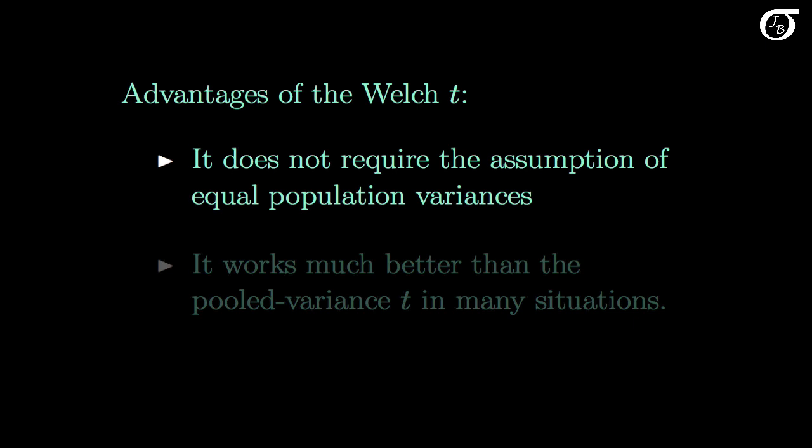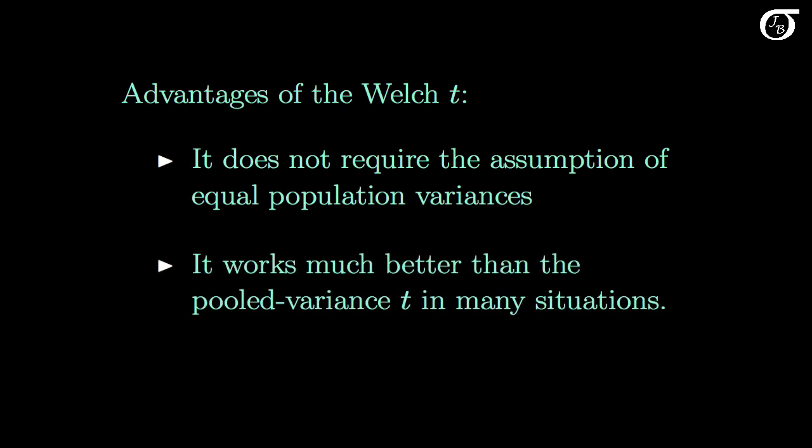Some advantages of the Welch or unpooled t: it does not require the assumption of equal population variances, and it works much better than the pooled variance t in many situations. It can perform much better than the pooled variance t for some violations of that equal variance assumption.